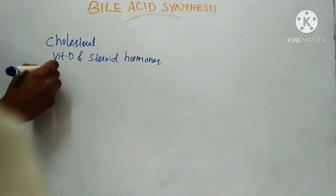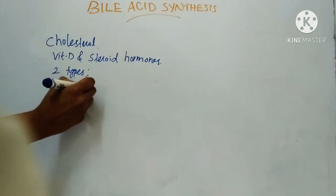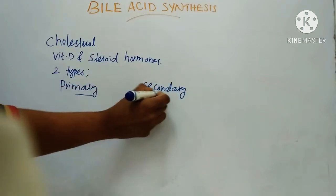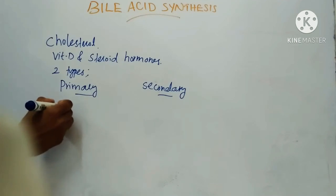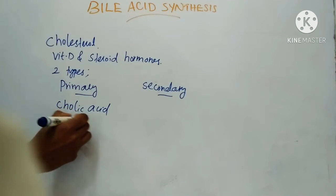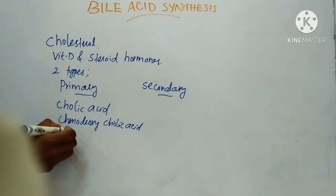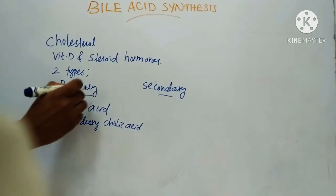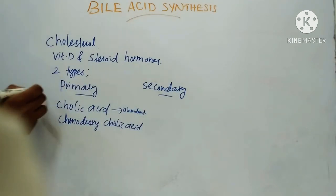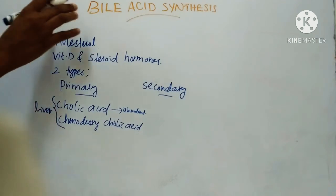There are two types of bile acids: primary and secondary bile acids. The primary bile acids are cholic acid and chenodeoxycholic acid. Among these, cholic acid is the most abundant bile acid. These primary bile acids are synthesized in the liver from cholesterol.